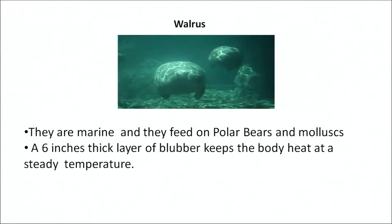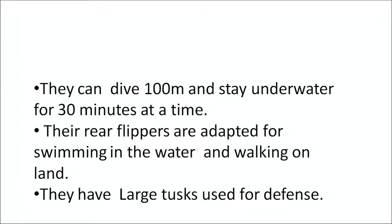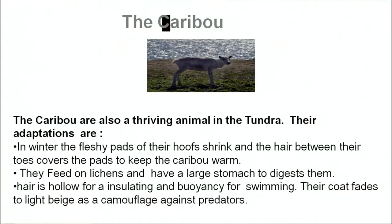Walrus is another polar animal — marine in habit, feeding on mollusks. A 6-inch thick layer of blubber keeps the walrus warm. They can dive up to 100 meters and stay underwater for 30 minutes. Their rear flippers are adapted for both swimming and walking on land, and they have tusks used for defence. The caribou is another interesting tundra animal — the fleshy pads of their hooves shrink and hair between their toes cover the pads for warmth. They feed on lichens, have hollow hairs for insulation and buoyancy, and their coat fades to a light color for camouflage against predators.